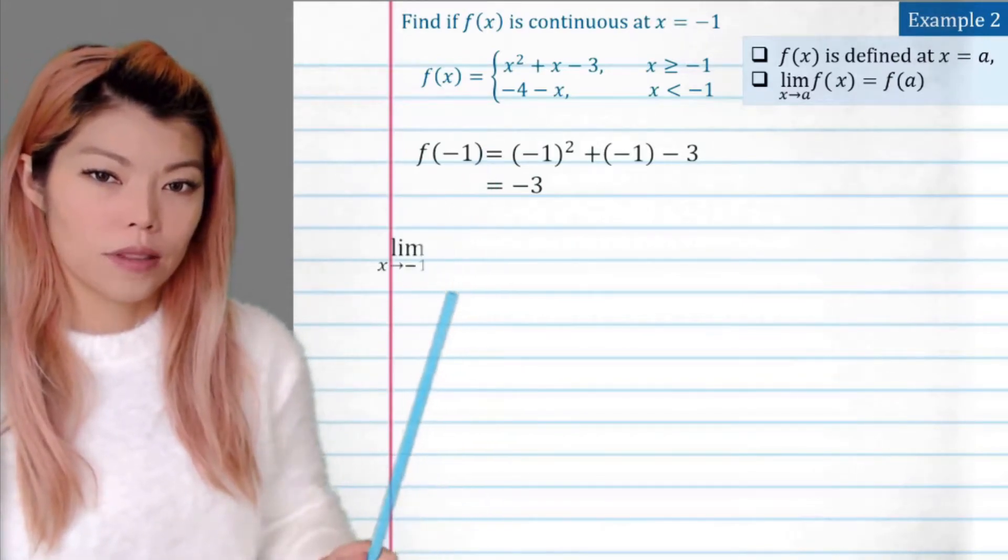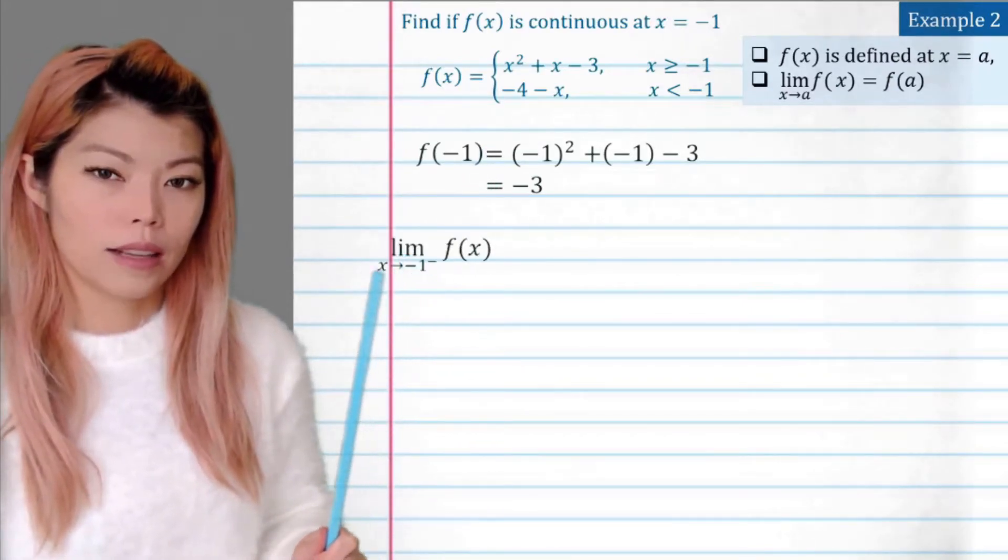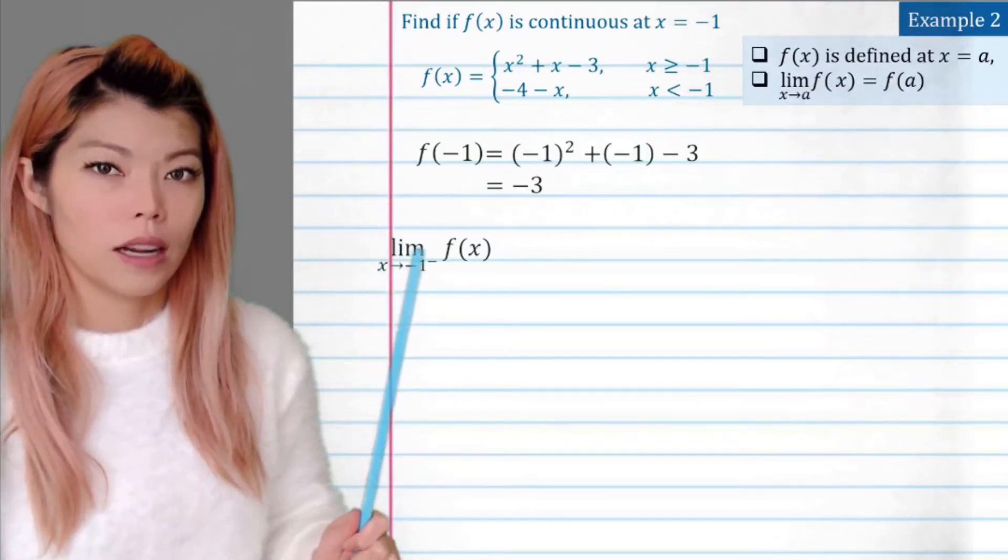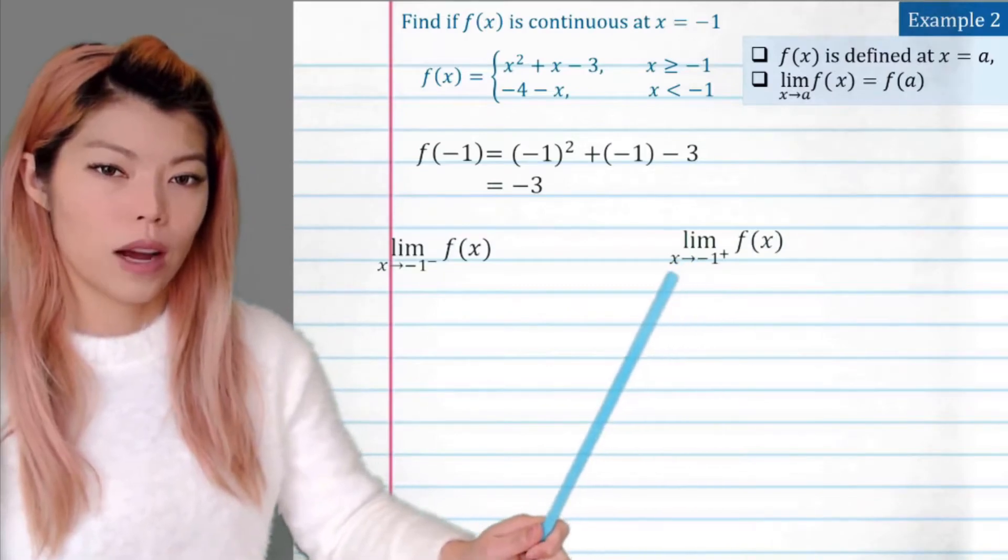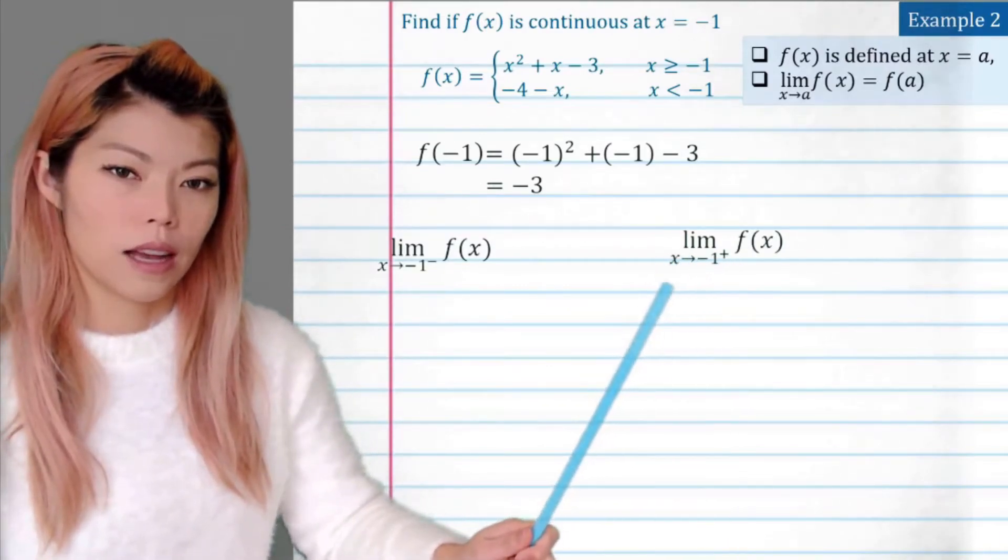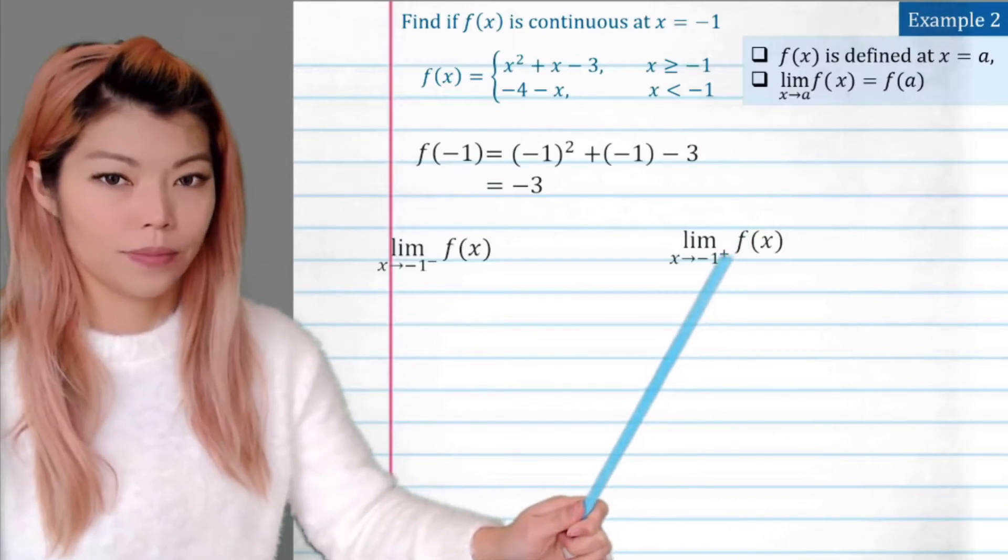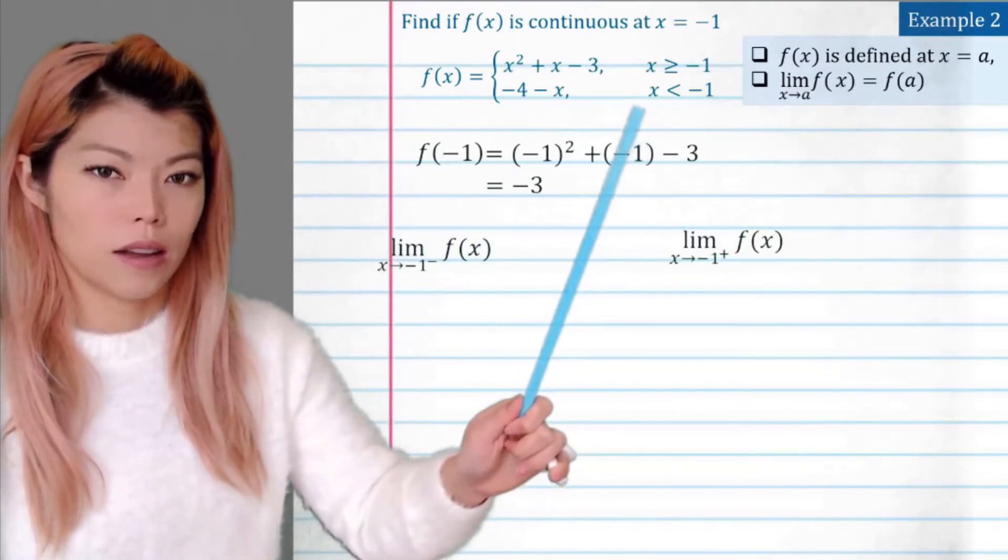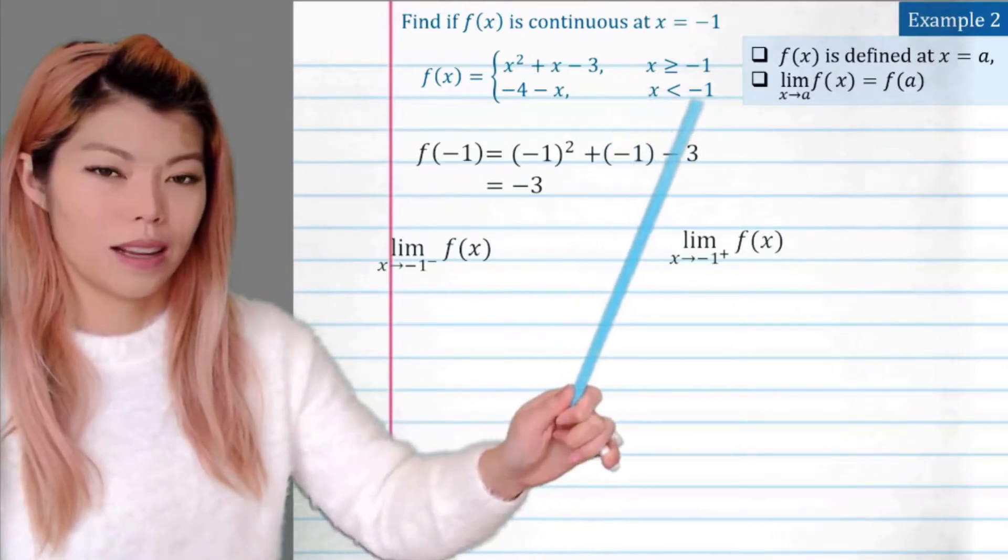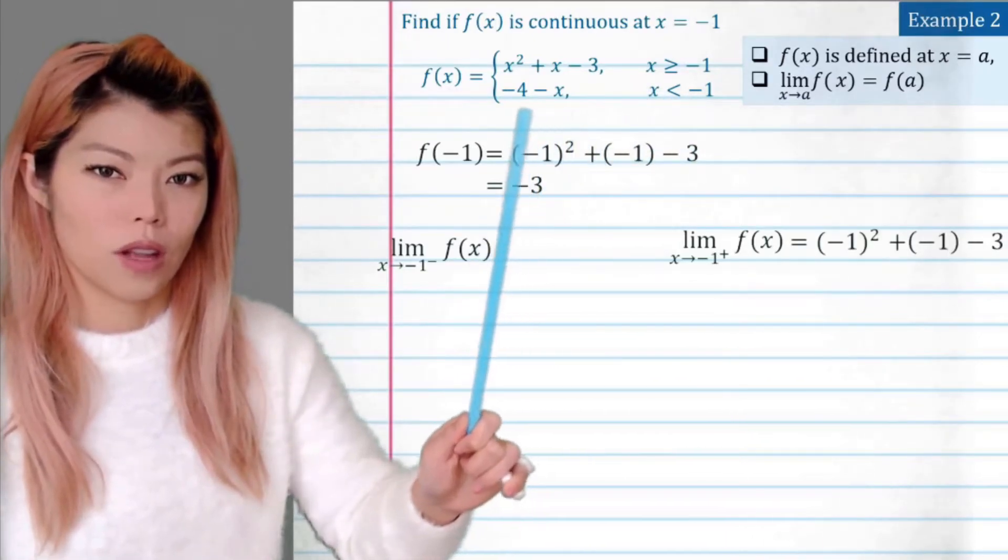So from the left side, we write the limit of x approaching negative 1 to the negative to represent left. And for the right side, we write the limit of f of x as x approaches negative 1 with a little plus sign. So from the left side, now the left side is where x is less than that. We use this line here.